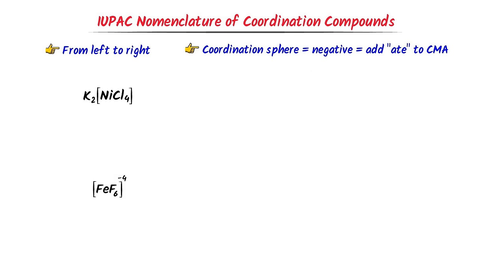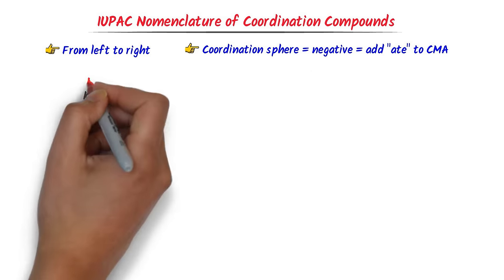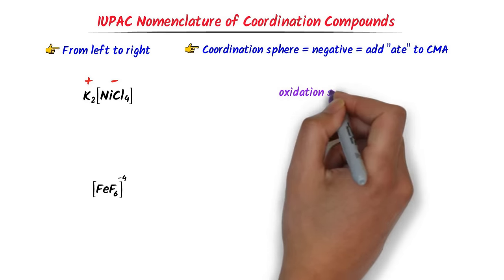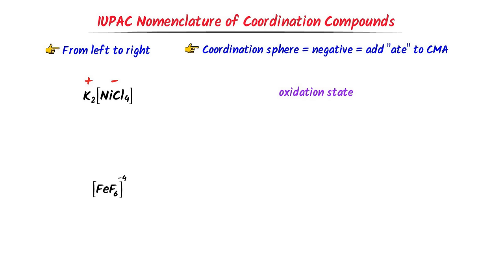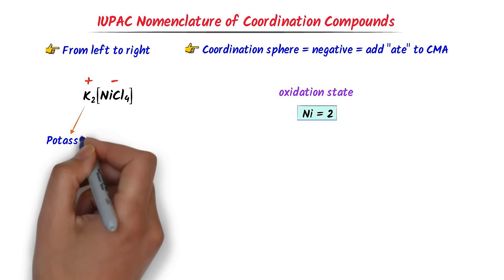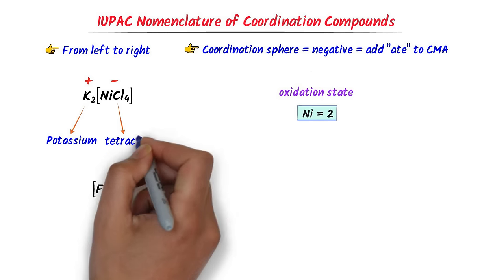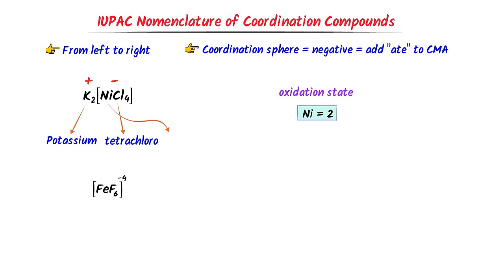Now consider these coordination compounds. As usual, I write positive charge on the left and negative charge on the right. I calculate the oxidation state of the central metal atom, which is nickel. After calculation, the oxidation state of nickel is +2. According to the rule, I write 'potassium', and in the coordination sphere there are four ions of chlorine so I write 'tetrachloro'. The central metal atom is nickel and the charge on the coordination sphere is negative, so I write 'nickelate'. The oxidation state of nickel is 2. Thus I get 'potassium tetrachloronickelate(2)'.